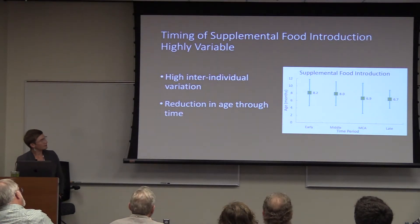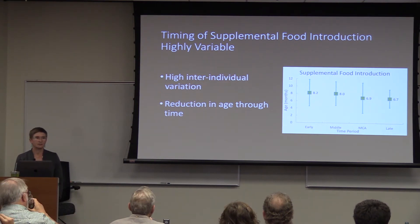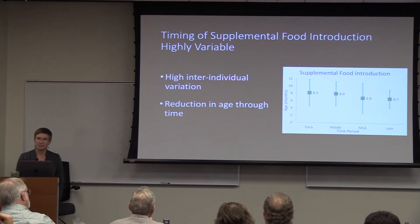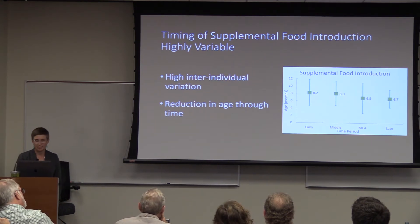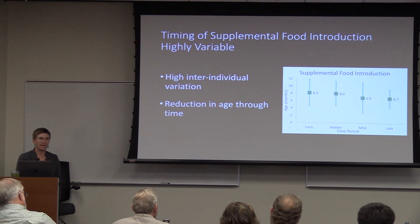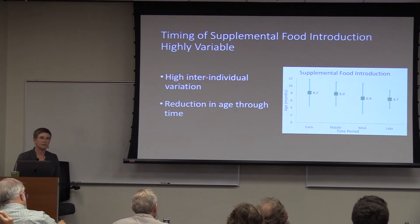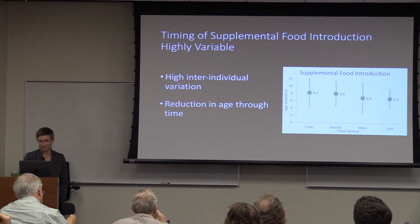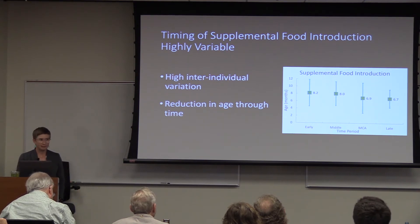Transitioning to the data on supplemental foods in ancient California: there's pretty high inter-individual variation in the timing of introduction of supplemental foods. On average, it's around eight months prior to the warming period, dropping to six to seven months during and after the warming period. This mean is above the World Health Organization recommendation of introduction at six months, but there's high variation — people are getting supplemental foods anywhere from three to twelve months of age.